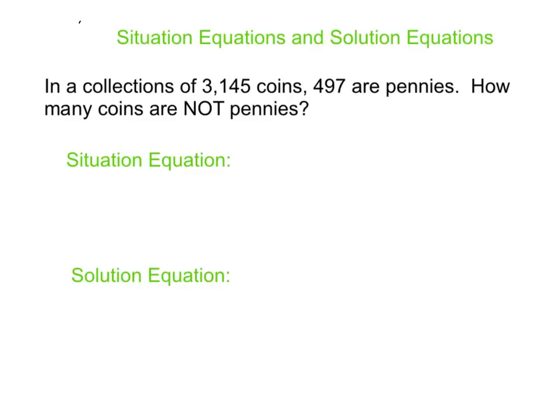I see one of my many typos, I'm sure. Let's pretend it's not there. In a collection of 3,145 coins, 497 are pennies. How many coins are not pennies? Well, if 497 are pennies, the rest must not be pennies. So here's my situation. I have 3,145 coins, and if I take out the 497, I'll be able to find the number of coins that aren't pennies.